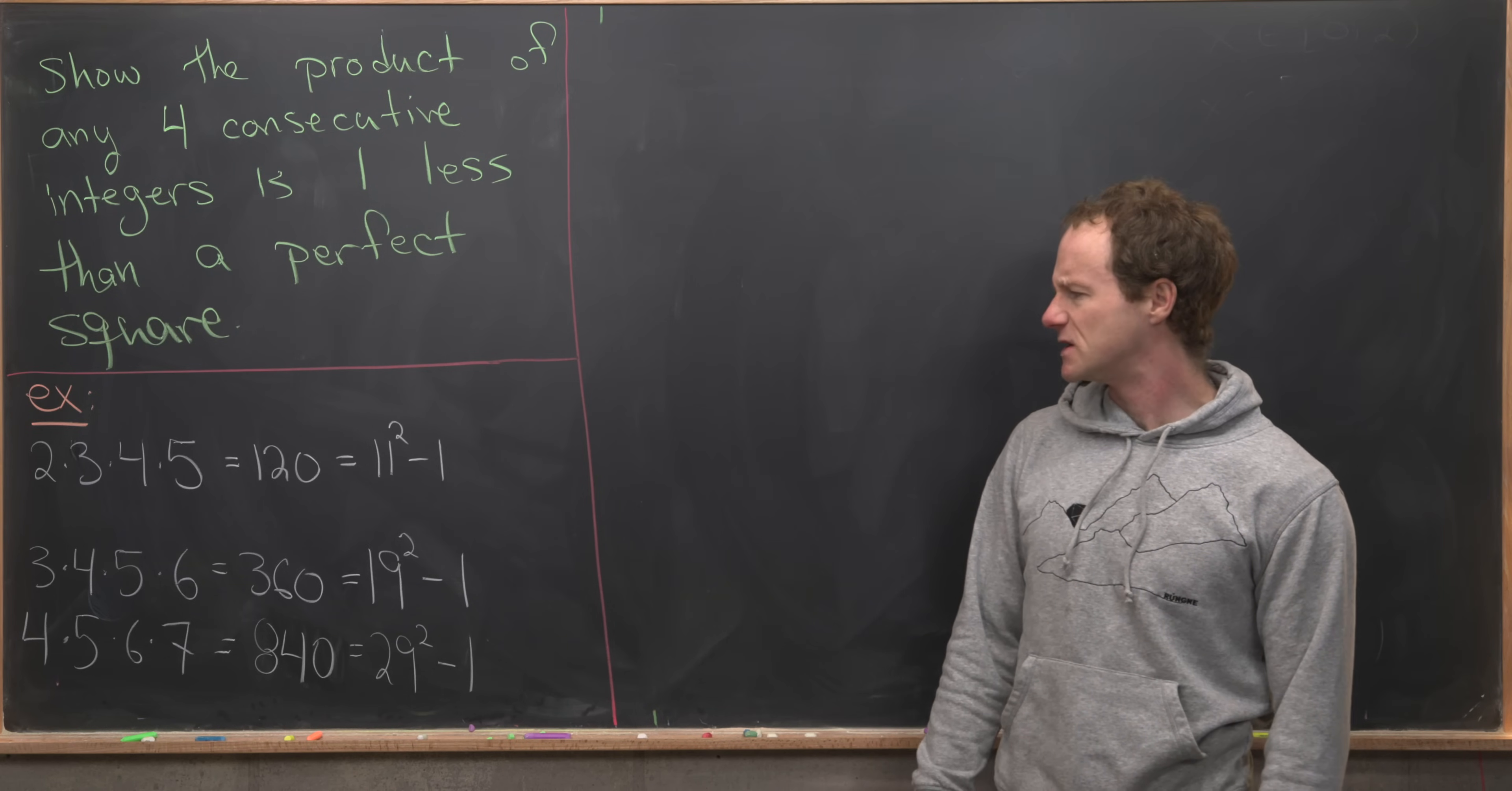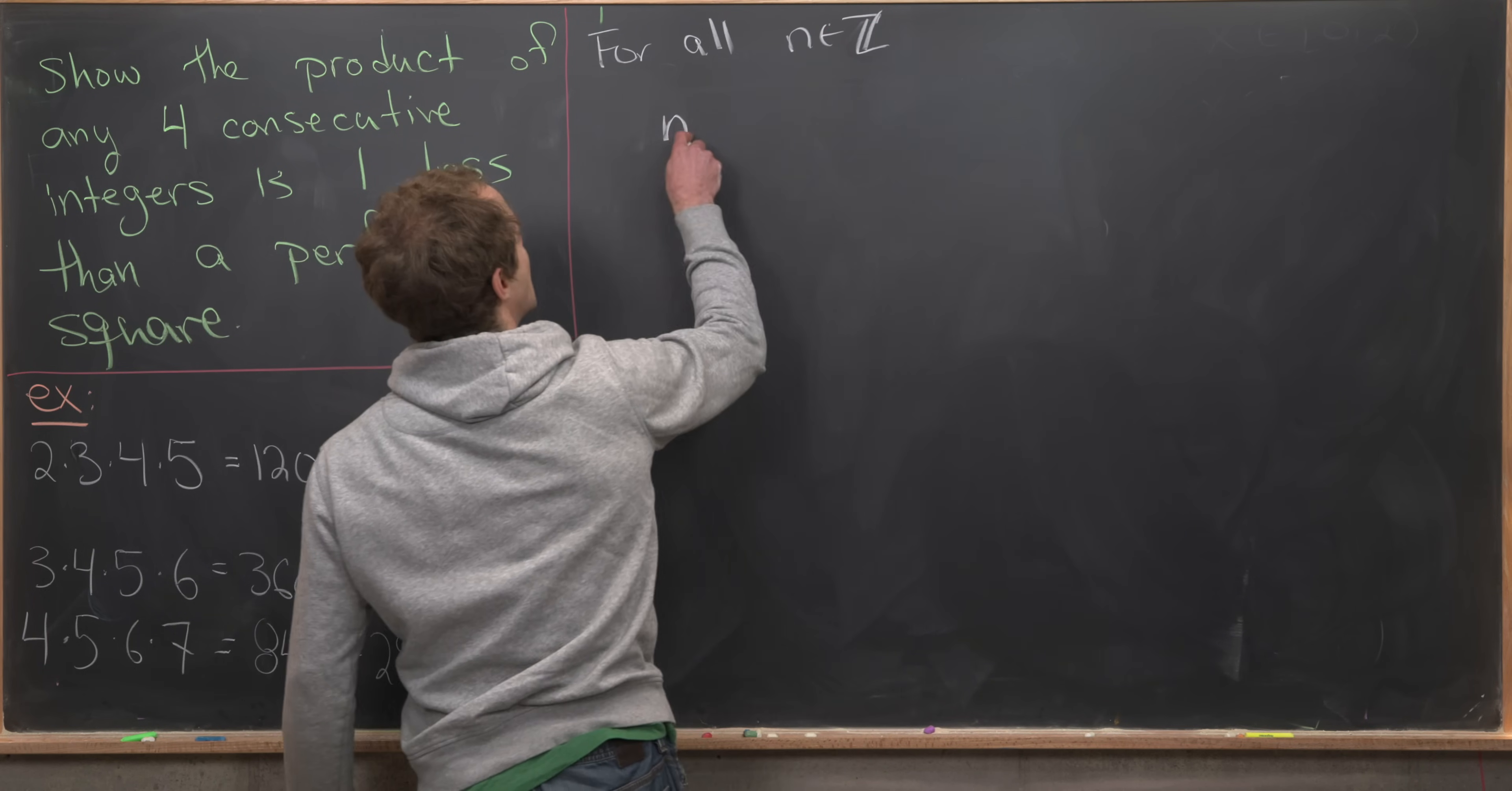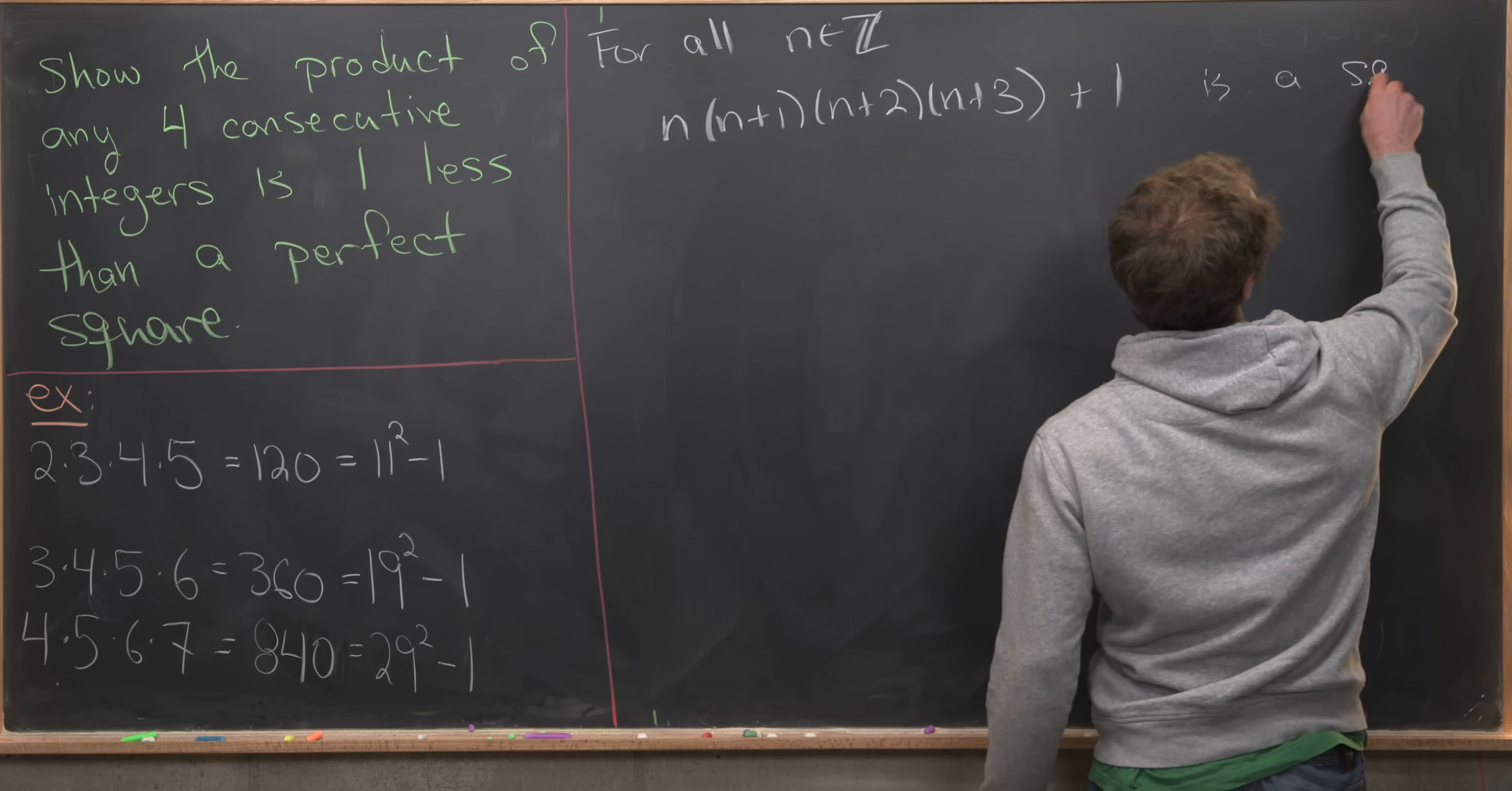So let's jump into the solution. Notice that this will be equivalent to showing for all integers n: n times (n+1) times (n+2) times (n+3) plus 1 is a perfect square.